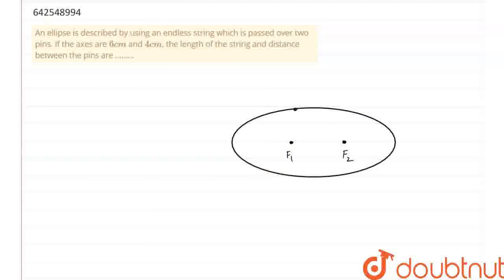Hello everyone, so now we are going to solve this question which says: an ellipse is described by using an endless string which is passed over two pins. And if the axes are 6 cm and 4 cm, we have to find the length of the string and the distance between the pins.